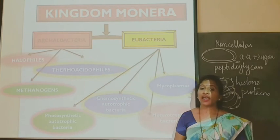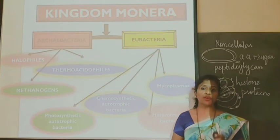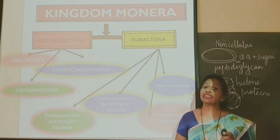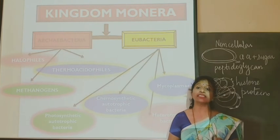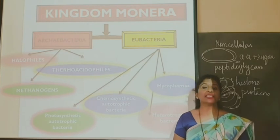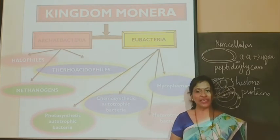So that was all about Kingdom Monera, wherein we have discussed Archaebacteria, Eubacteria, and their various forms. I hope you all have understood Kingdom Monera. In the next class we will be discussing the second kingdom — Kingdom Protista. Thank you.